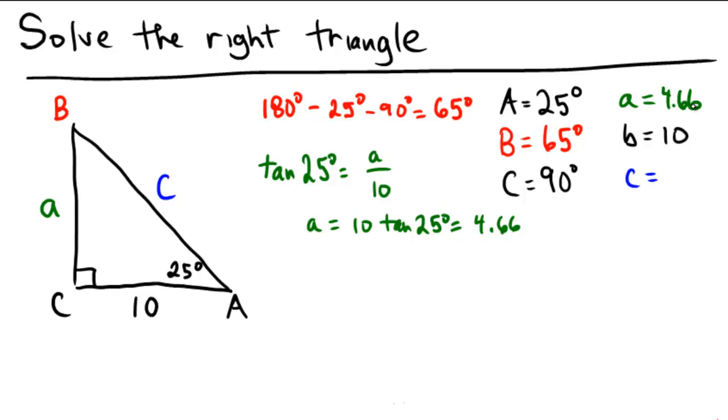Last piece now, side C. We could use the Pythagorean theorem now that we have A and B, but since A was approximated to two decimal places of accuracy, I'm going to choose to use a trig function. I'm going to use a trig function that is going to relate the adjacent side to the hypotenuse here. So we're going to use a cosine. Cosine of 25 degrees is equal to the adjacent which is 10 over the hypotenuse which is C.